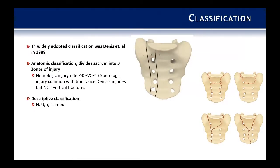In terms of classifications, the first widely adopted was Denny et al. in 1988 — an anatomic classification dividing the sacrum into three zones of injury. Zone three in the central canal is worst and zone one in the sacral ala is least severe. This was developed before widespread CT adoption, so most zone three fractures they saw were transverse fractures, which is why their published neurologic injury rates were so high. Vertical fractures in this area have subsequently been shown to have very low rates of neurologic injury. It is the transverse fractures with sacral kyphosis that result in neurologic injury in general.